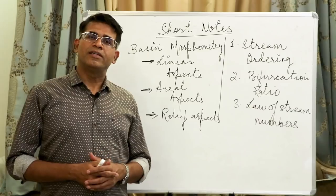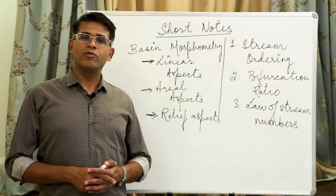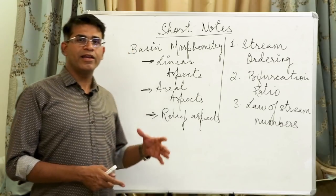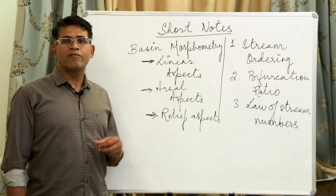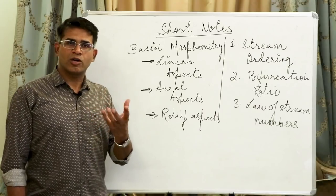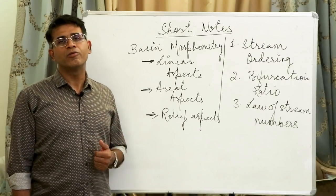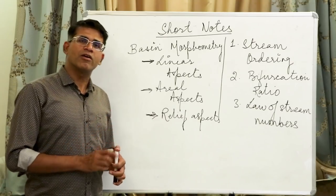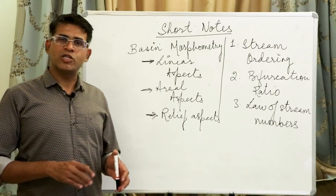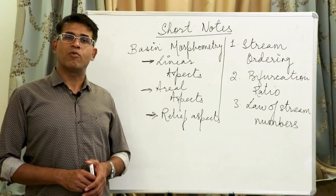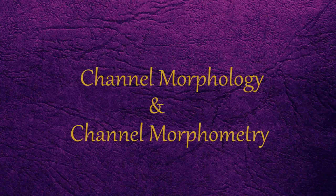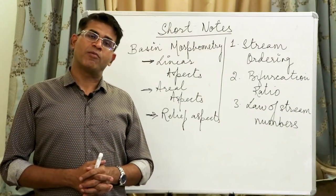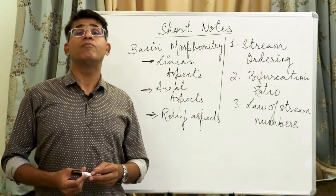We are taking up a couple of random topics that you might need for short notes. They haven't asked any of these questions till now, but as part of maybe a 10-marker or short 5-marker, these could be important concepts for the sake of completion. The focus is on topics under Channel Morphology and Channel Morphometry. Before that, I want to briefly explain what is the scope of Channel Morphology and what I mean by Channel Morphometry.